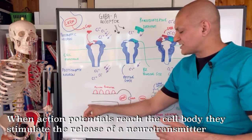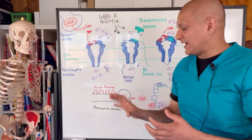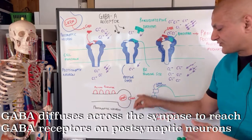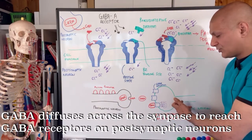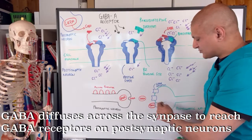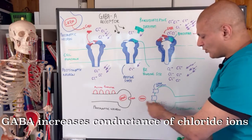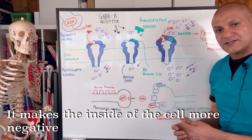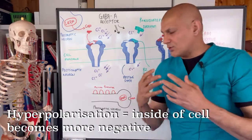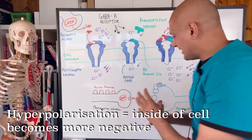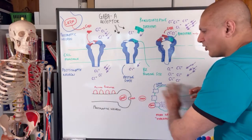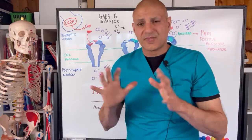When this electrical stimulation gets to the cell body, it can't jump across this space, so it stimulates the release of a neurotransmitter. So if this pre-synaptic neuron was inhibitory and has got loads of GABA, it will stimulate the release of GABA from the cell body, which will diffuse across the synapse and bind to a GABA receptor in the post-synaptic neuron. When GABA binds with this receptor, it increases the conduction of chloride ions, making the inside of the cell more negative — we say it hyperpolarises the cell. This process is called hyperpolarisation, and it stops the propagation of that signal.